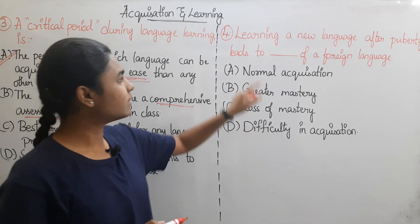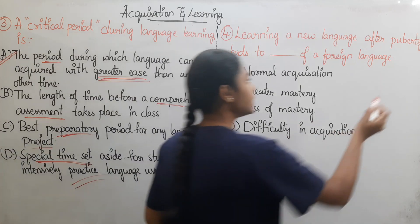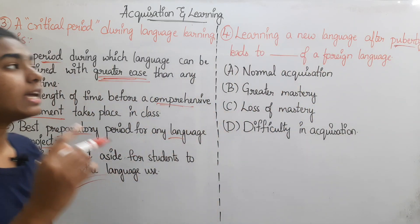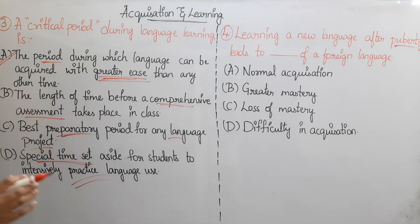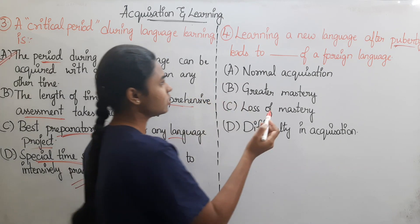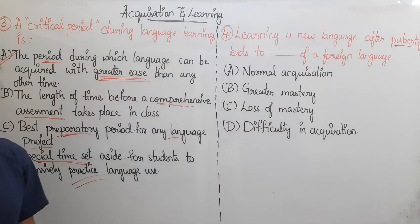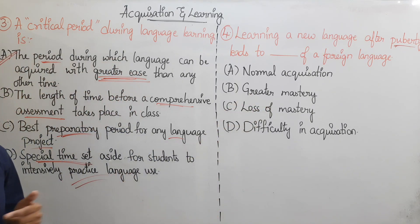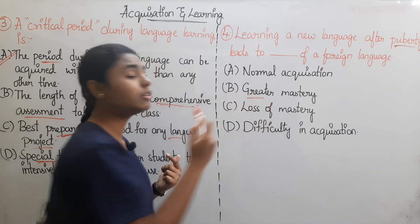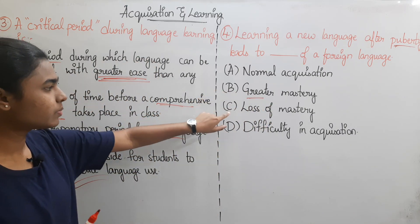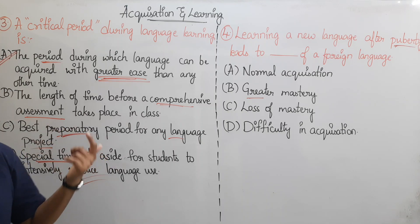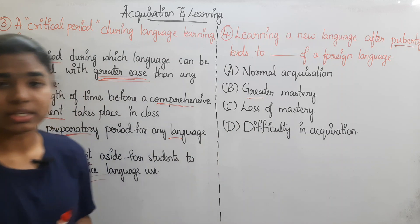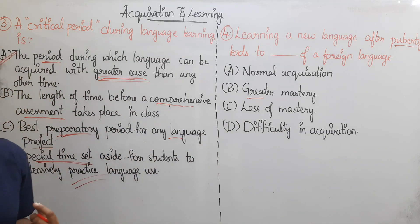Next question: Learning a new language after puberty leads to what — of a foreign language? After puberty, the adult stage. Option A: Normal acquisition of a foreign language. Option B: Greater mastery. Option C: Loss of mastery. Option D: Difficulty in acquisition. If you want to acquire a new language after puberty, you will face problems.